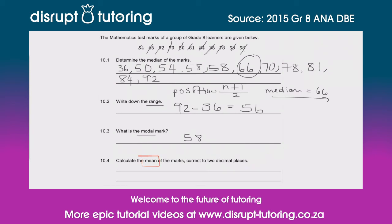The final question asks us to calculate the mean of the marks, correct to two decimal places. Another word for mean is average — what would a typical learner in the class get? The way we do it is add up all the numbers and divide by the total count. So: 36 + 50 + 54 + 58 + 58 + 66 + 70 + 78 + 81 + 84 + 92 = 727. That's the sum of all the numbers, and we divide by 11.